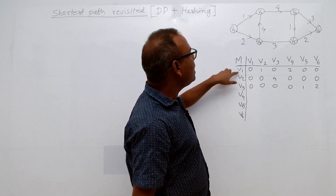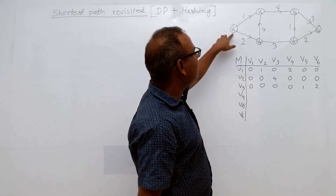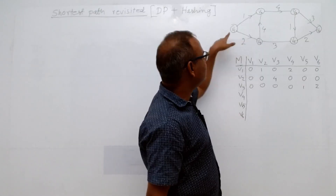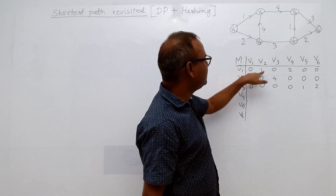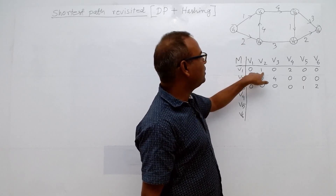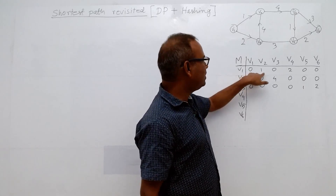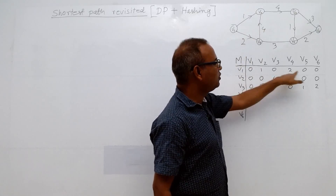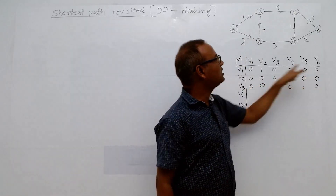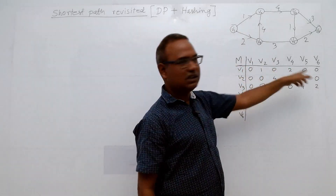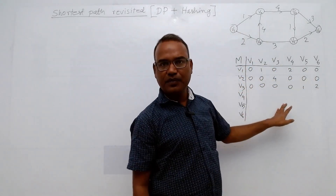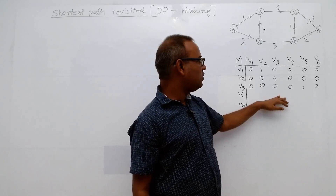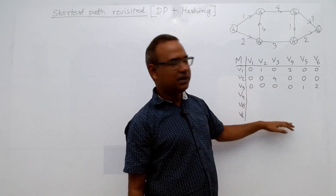V1 has edges to V2 and V4, so V1 to V2 is 1 (the edge weight), and V1 to V4 is 2. Where there is no edge, the value is 0. This is a weighted adjacency matrix — this matrix will be given as input.